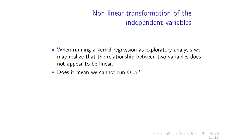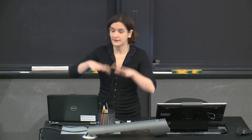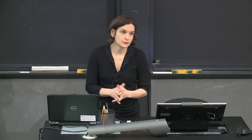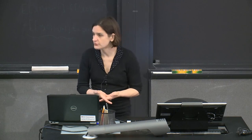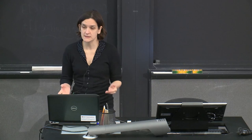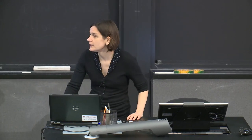You realize the relationship doesn't look linear at all — in some places it's very steep, in some places much flatter. So it doesn't look like it's going to be characterized nicely by a linear model. On the other hand, you wouldn't want to continue working with a kernel regression because it's a bit heavy going — it's harder to control for other things. So you'd really want to move to a linear model. The question is: can you do that if y and x don't appear to be linear?